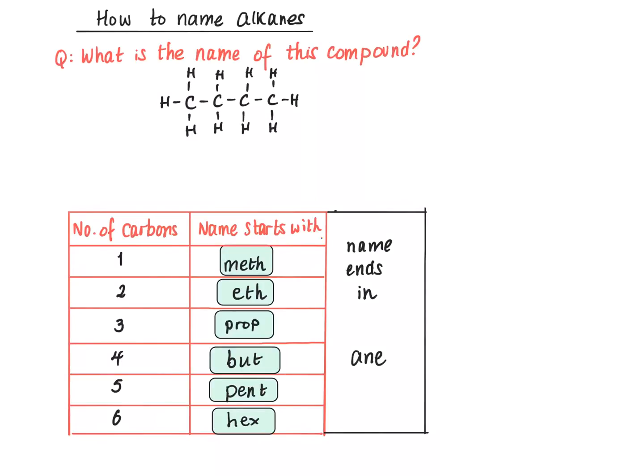If we look at this compound here there are one, two, three, four carbons. Four carbons means the name starts with bute.